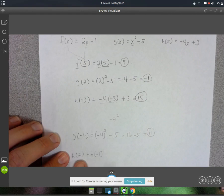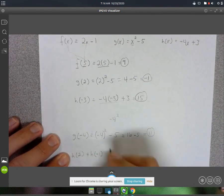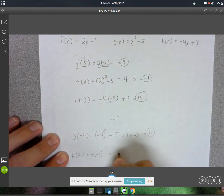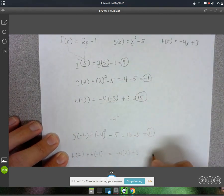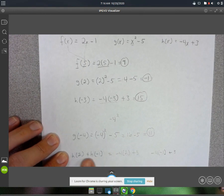Here we've got h of 2 plus h of negative 1. So we have to do basically two evaluations and then add them together. Alright, so h of 2 is going to be negative 4 times 2 plus 3. And then h of negative 1 is negative 4 times negative 1 plus 3. And then don't forget, we're adding them. So there's got to be a plus sign here.